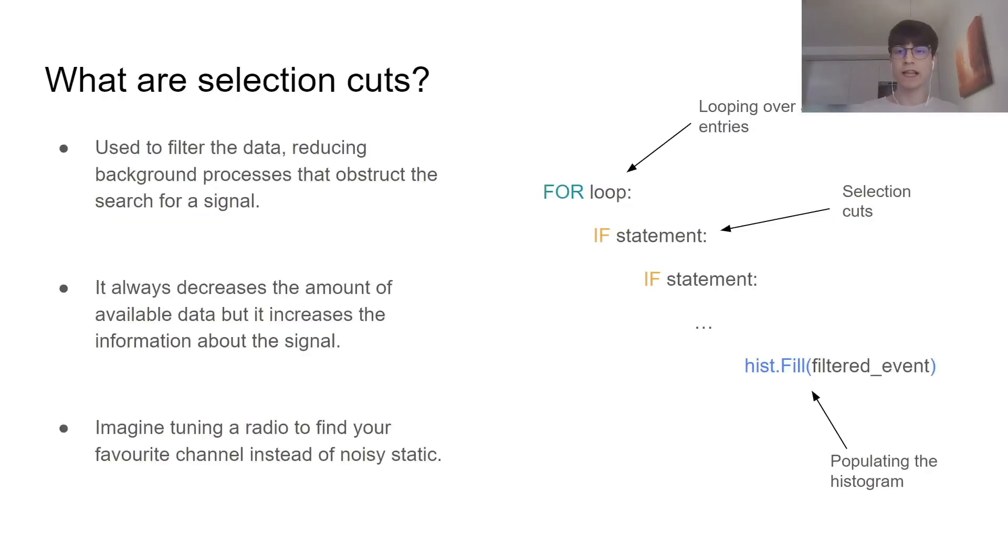Moving to the core of this notebook, selection cuts can be explained through three main points. First of all, they're used to filter the data, reducing background processes that obstruct the search for a signal. And this process always decreases the amount of available data, but it increases the information that we get about the signal. You can imagine this as tuning a radio to find your favorite channel instead of noisy static.